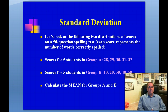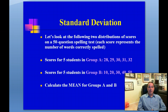Now we look at Group B. The five students in Group B got scores as follows: they got a score of 10, 20, 30, 40, and 50. So Student 1 got a score of 10, Student 2 got a score of 20, Student 3 a score of 30, then 40, and then 50 for Student 5.